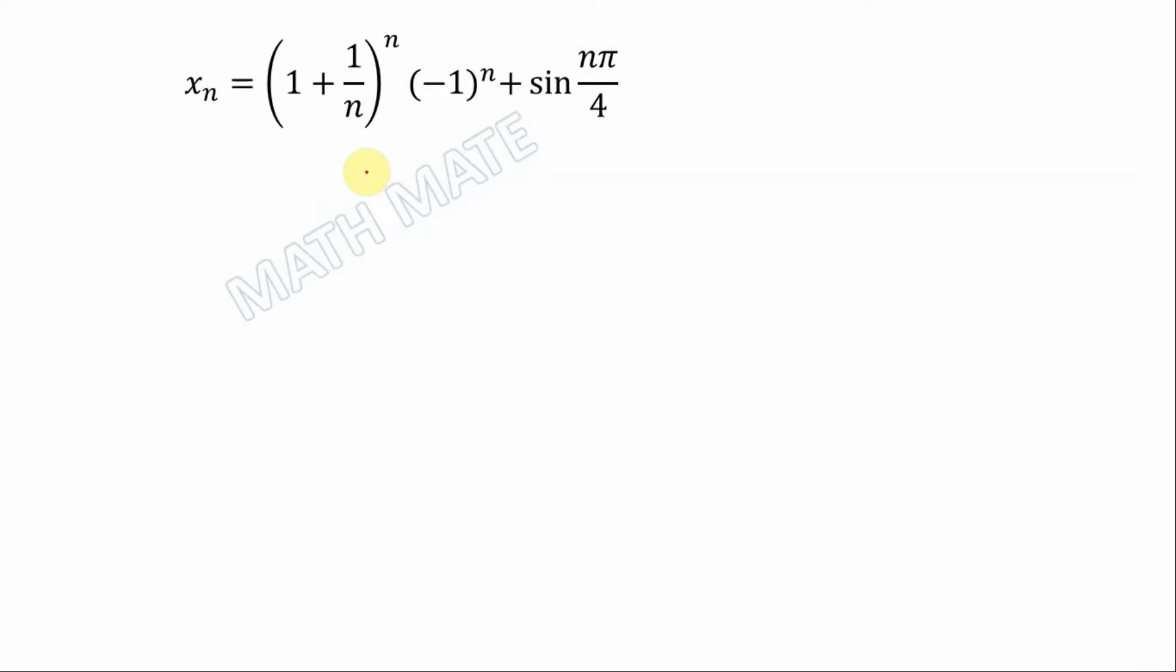Assalamu alaikum mathemates. Today we want to find lower and upper limit for xn which equals 1 plus 1 over n to the power of n multiplied by negative 1 to the power of n plus sinus nπ over 4. For this reason in the first step let's define which values gives sinus nπ over 4.